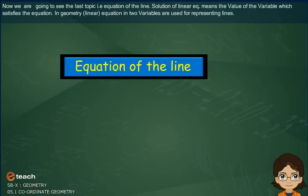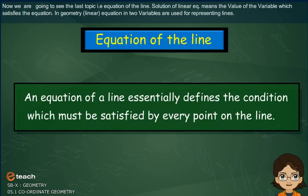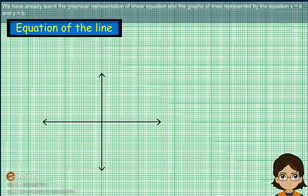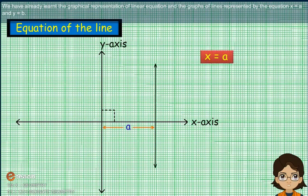Now we are going to see the last topic: equation of the line. The solution of a linear equation means the value of the variable which satisfies the equation. In geometry, linear equations in two variables are used for representing lines. Other equations are used for representation of curves also. The point which satisfies the equation lies on that line only. An equation of a line essentially defines the condition which must be satisfied by every point on the line. We have already learned the graphical representation of linear equations and the graphs of lines represented by x = a and y = b.